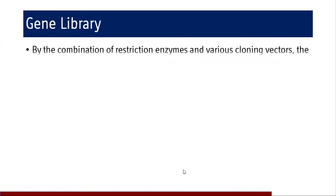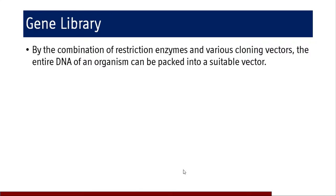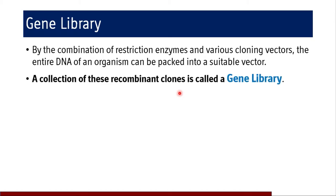Coming to gene library — by the combination of restriction enzymes and various cloning methods, we now have the entire DNA of an organism which can be packed into a suitable vector. After human genomic DNA is subjected to restriction enzymes, even a single restriction enzyme can cut it into numerous restriction fragments. These fragments can be incorporated into bacterial plasmids or cosmids using a suitable vector.